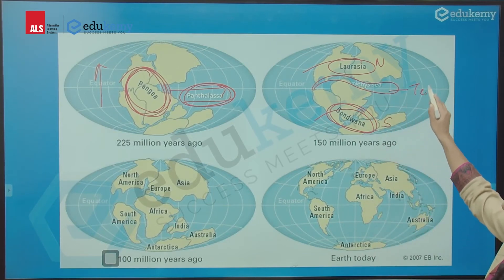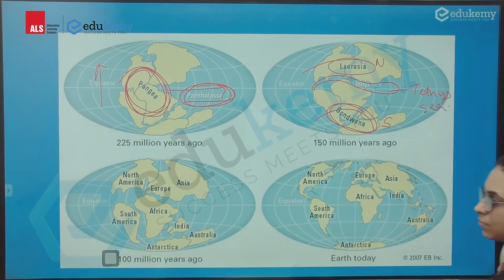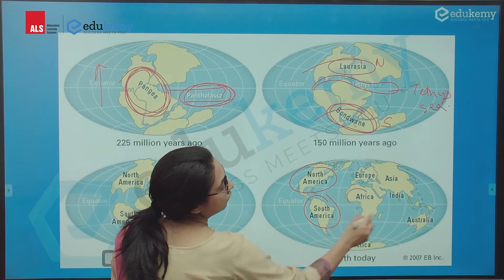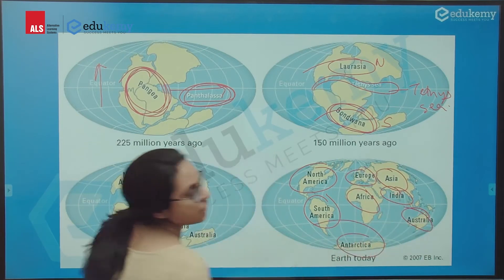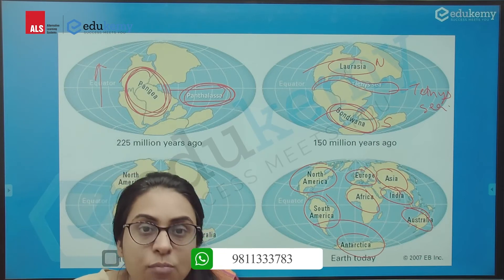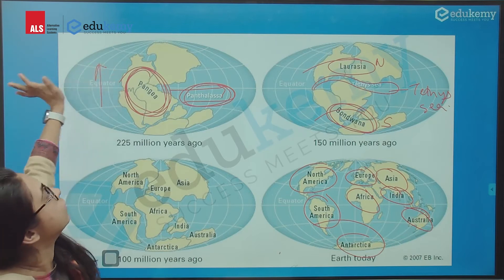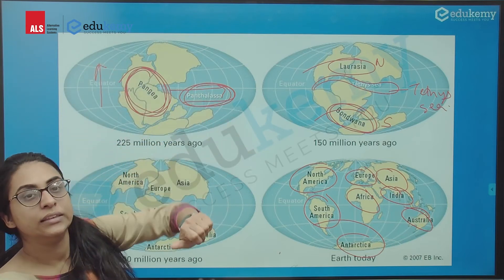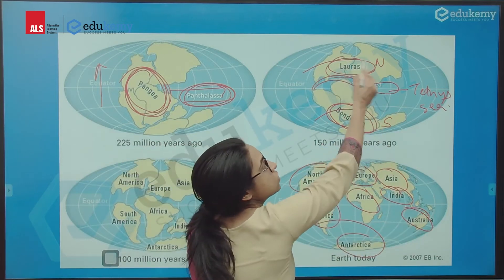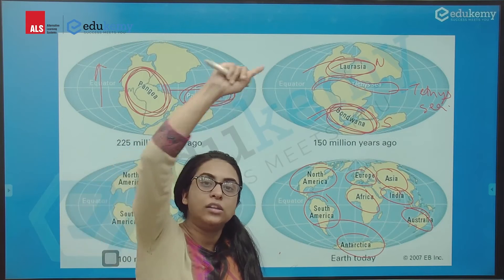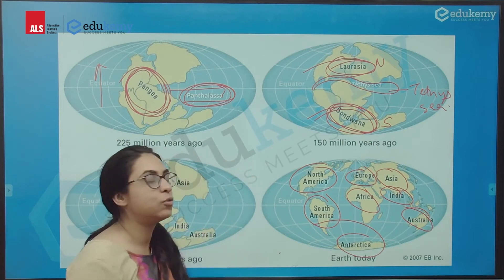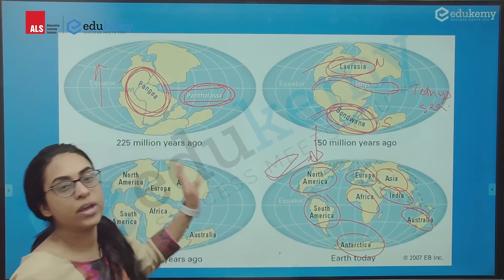The sea between the northern and southern part was known as the Tethys Sea. Then the continents moved northward and eastward again, forming the present-day shape of the continents. So as per Wegener, the continents have moved — first all together as Pangea, then breaking into Laurasia in the north and Gondwana in the south, with the Tethys Sea in between, and finally reaching the present-day configuration.